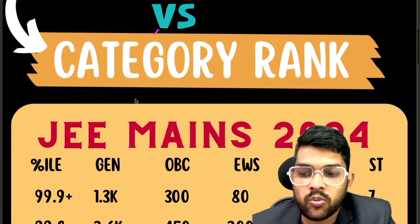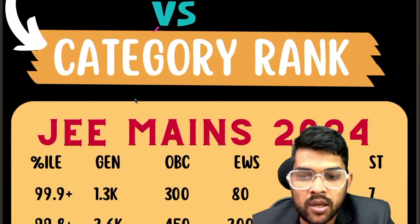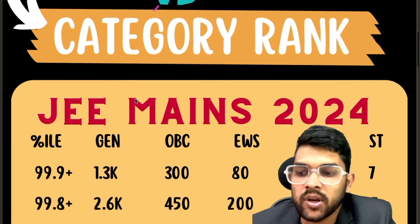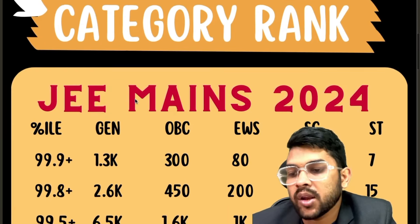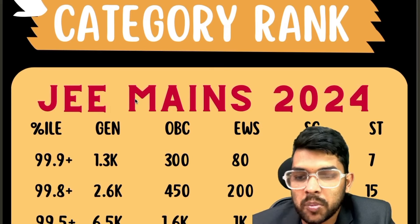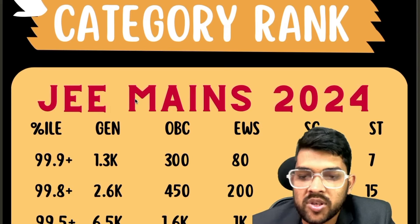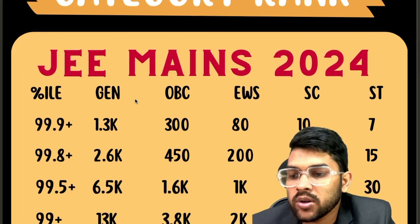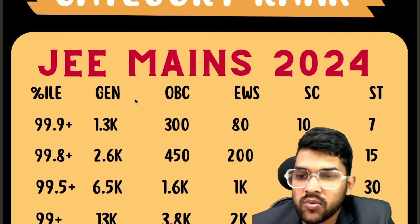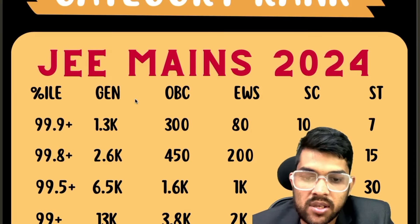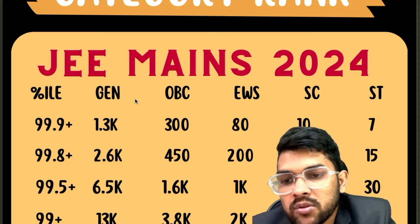For 99.9 percentile: General rank 1000, OBC 300, EWS 80, SC 10, ST 7. For 99.8 percentile: General 2600, OBC 450, EWS 225, SC 15. For 99.5 percentile: General 6500, OBC 1600, EWS 1000, SC 70, ST 30.